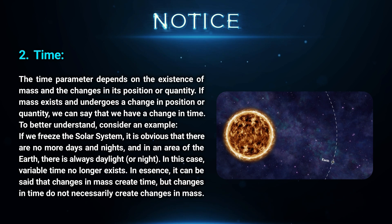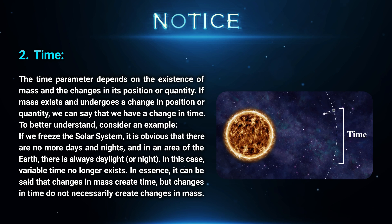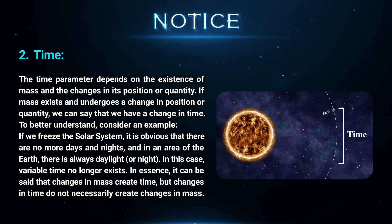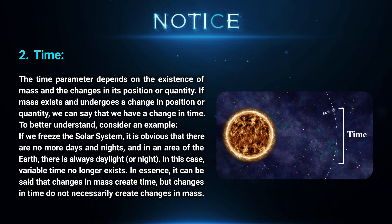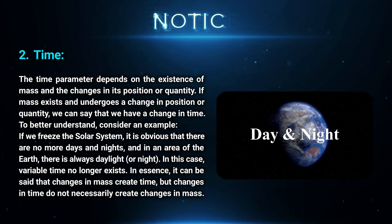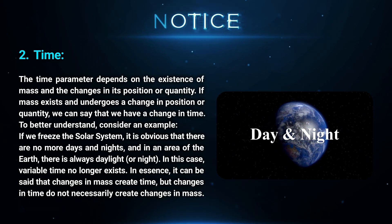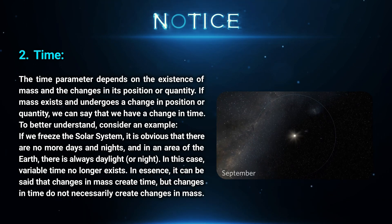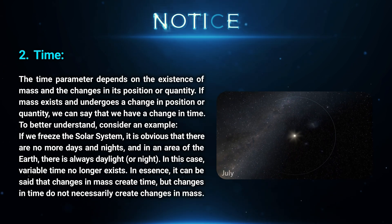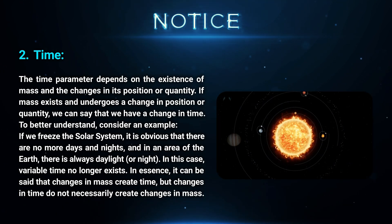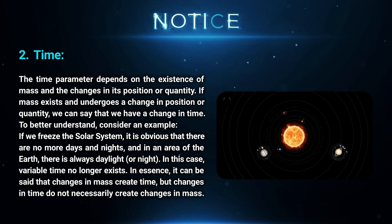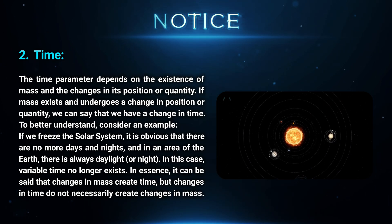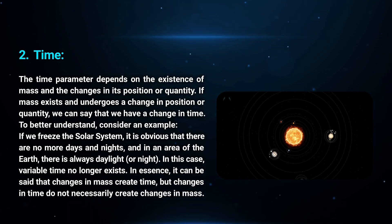Time: The time parameter depends on the existence of mass and the changes in its position or quantity. If mass exists and undergoes a change in position or quantity, we can say that we have a change in time. To better understand, consider an example. If we freeze the solar system, it is obvious that there are no more days and nights, and in an area of the Earth, there is always daylight or night. In this case, variable time no longer exists. In essence, it can be said that changes in mass create time, but changes in time do not necessarily create changes in mass.